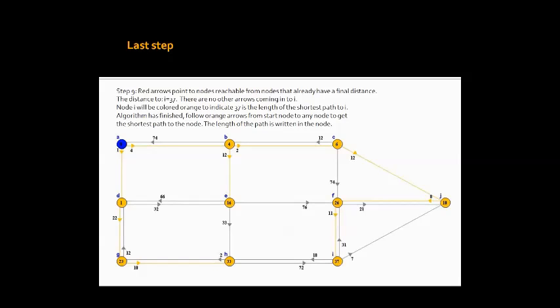The last step: red arrows point to nodes reachable from nodes that already have a final distance. The distance to I is equal to 37. There are no other arrows coming into I. Node I will be colored orange to indicate that 37 is the length of the shortest path to I. The algorithm has finished. Follow the orange arrows from the start node to any node to get the shortest path to that node.